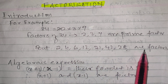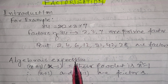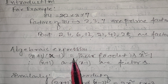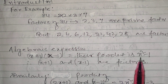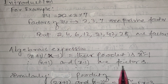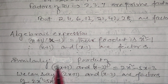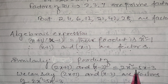Similarly, for an algebraic expression: (x+1) and (x-1) multiplied together equals x² - 1. Therefore x+1 and x-1 are factors. One more example: the product of (2x+1) and (x-2) is equal to 2x² - 5x - 3.